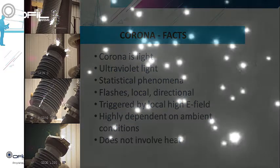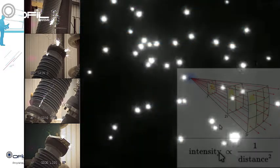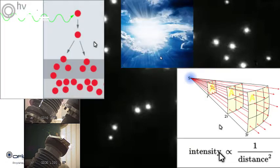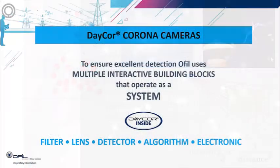Considering these facts, the DayCor technology uses multiple interactive building blocks that operate as a system to enable seeing corona UV in daytime. These building blocks include proprietary in-house manufactured optical filters, UV lenses, a powerful detector, and orchestrated dedicated algorithms and electronics.